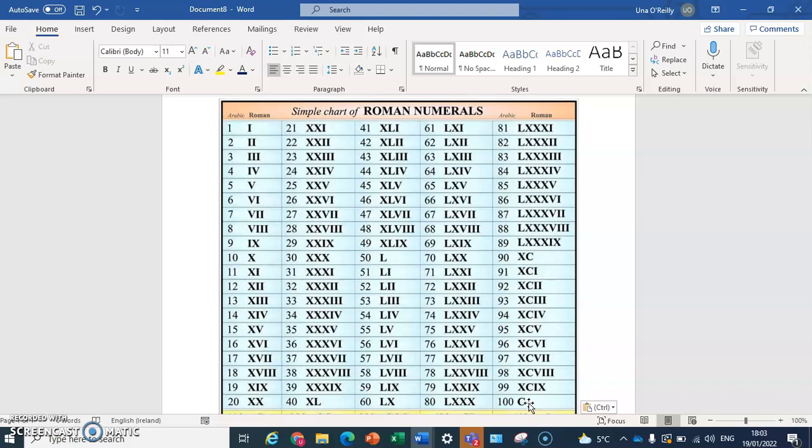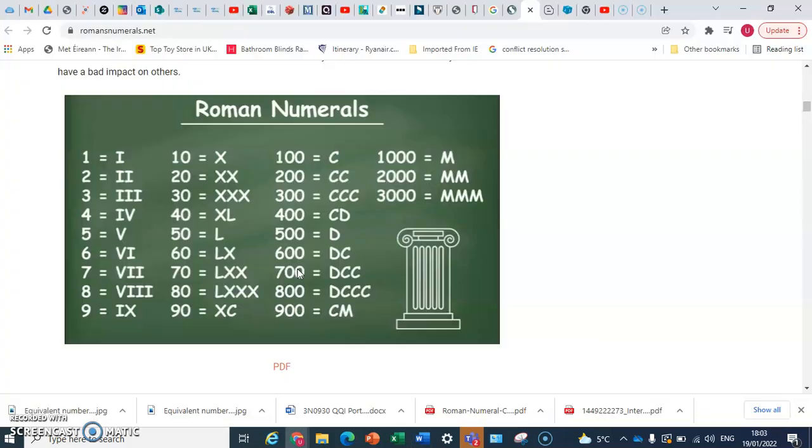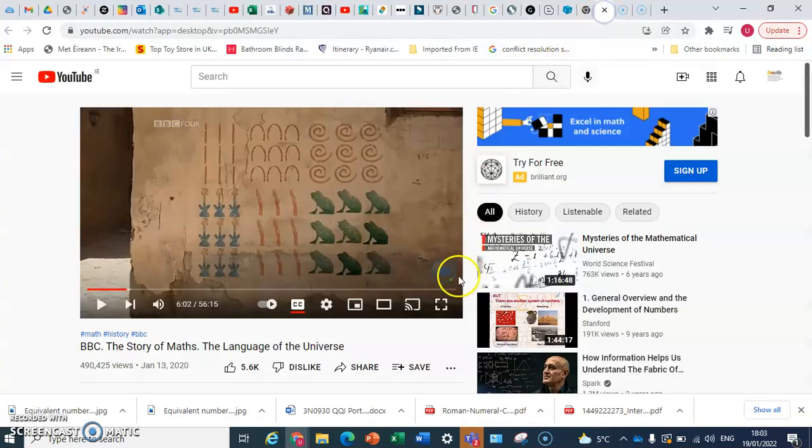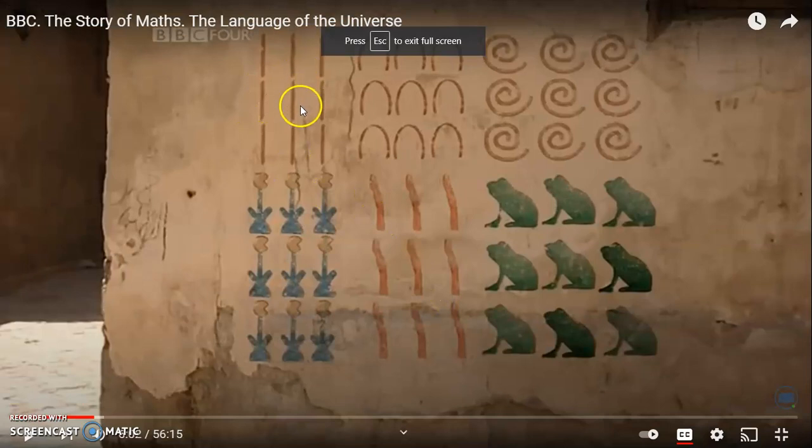So just wanted to point that out to you. The module that we're looking at this term and next term is pattern and relationship. And you can see some patterns in terms of the way the numbers are ordered and managed here in the Roman system.